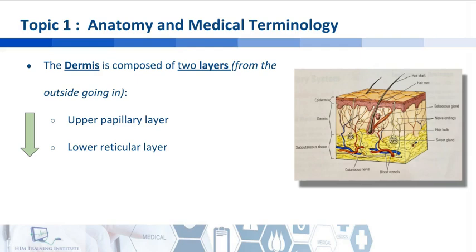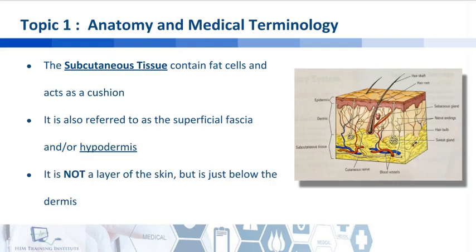In your book, there is a second name for the dermis. Are you able to see it? The dermis is also called the corium. Underneath the dermis is the subcutaneous tissue, which contains fat cells and acts as some sort of a cushion. The subcutaneous tissue is also called the superficial fascia, or sometimes referred to as the hypodermis. Again, we are reminded that the subcutaneous tissue is not a layer of the skin, but it is just below the dermis.